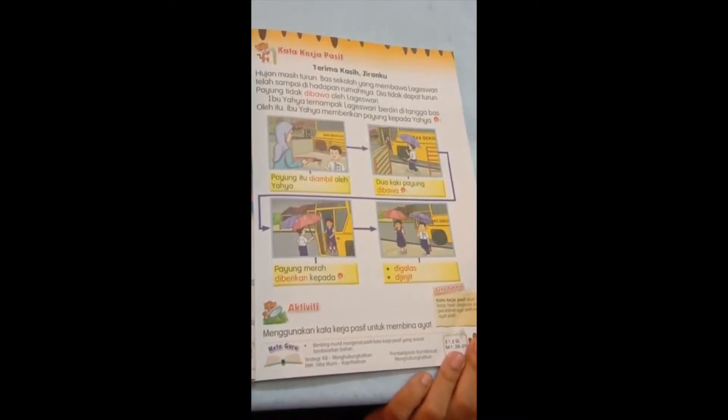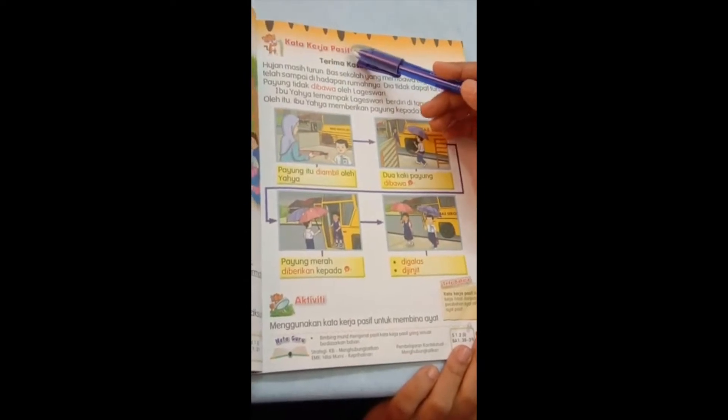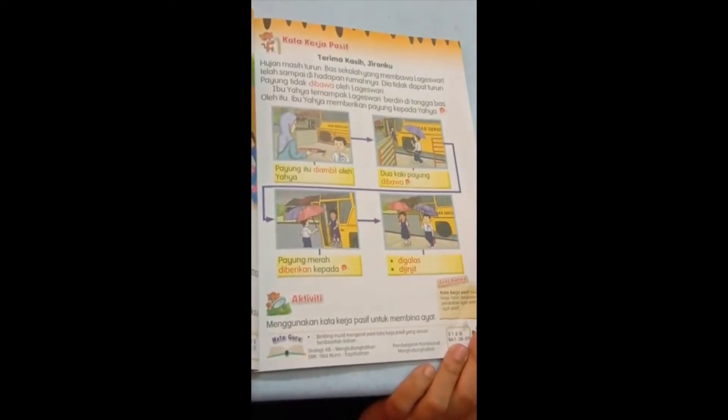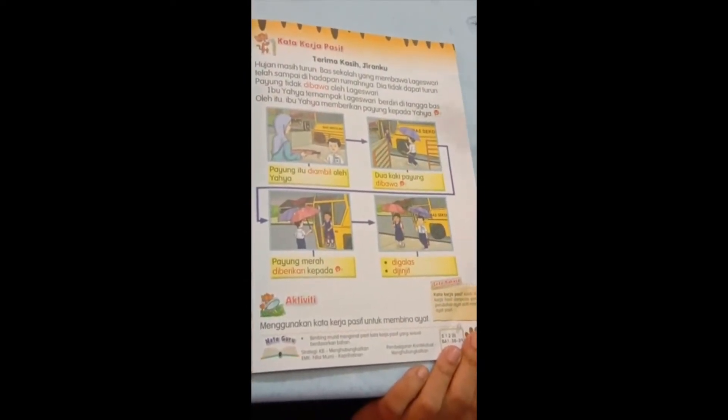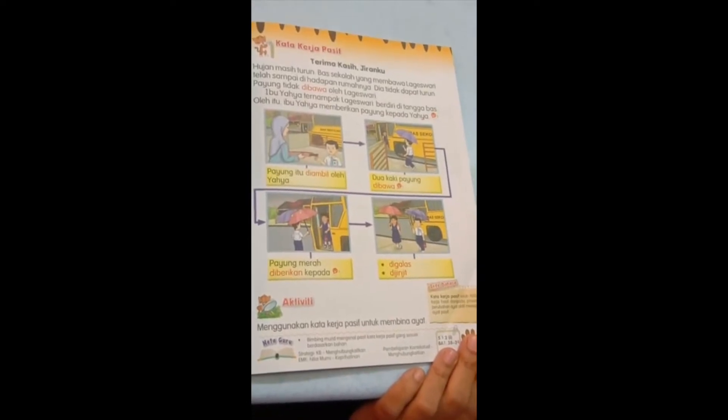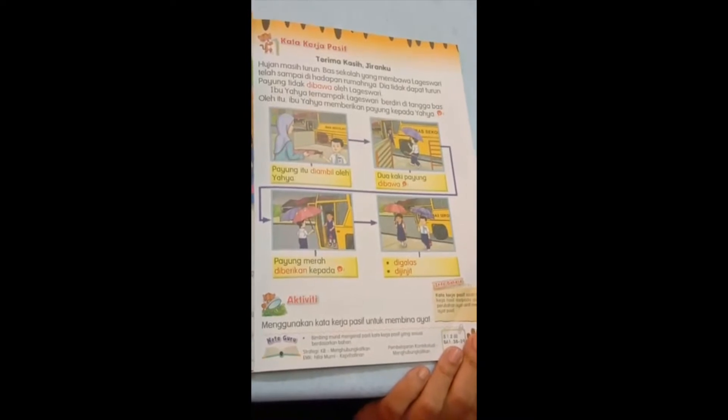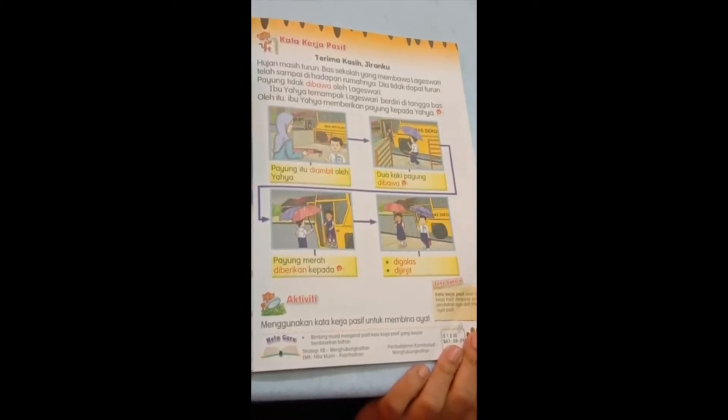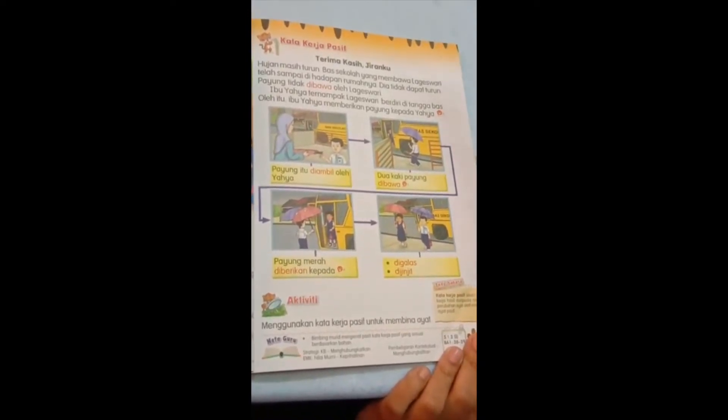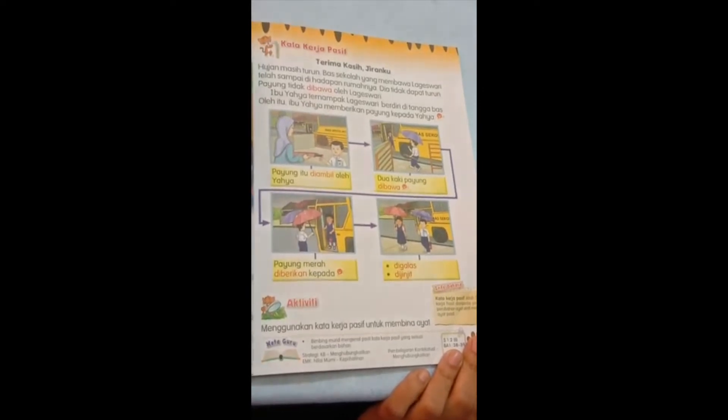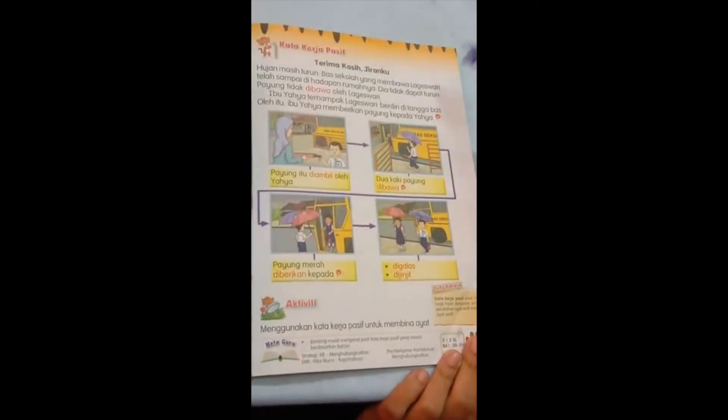But today we will be looking at kata kerja passive which is we use for past tense. Like ibu sedang memasak ayam, if you change to ayat passive it will be ayam itu dimasak oleh ibu. So memasak here will change to dimasak. Let's look at this passage over here.